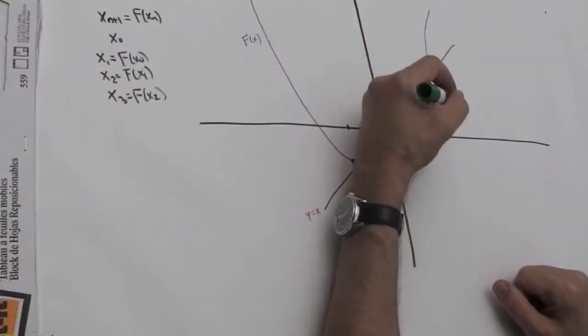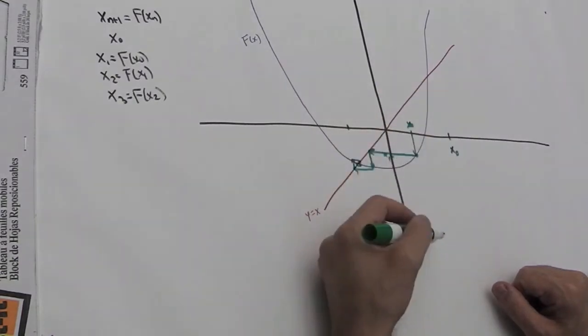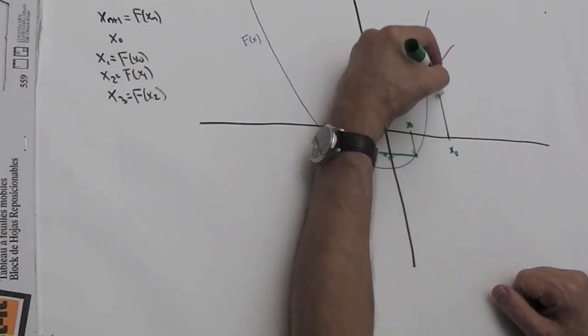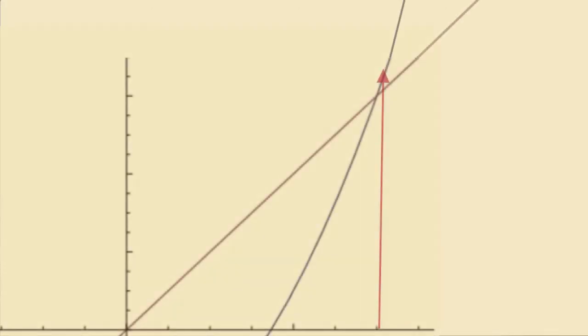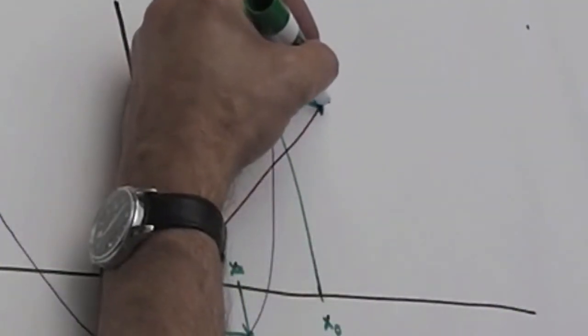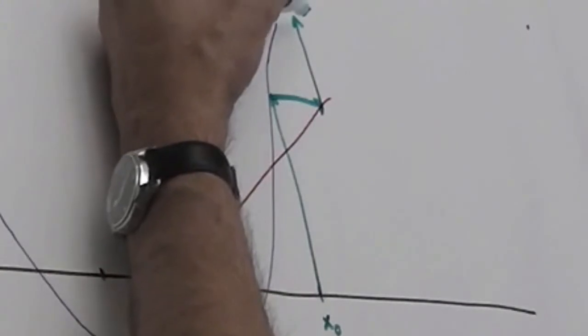Let's try a different example. Suppose we pick x_0 over here. We figure out f(x_0) by going up to the curve - that's x_1. To find x_2, I take the output and turn it into an input by going over to the line y = x, then up to the graph to find x_2.